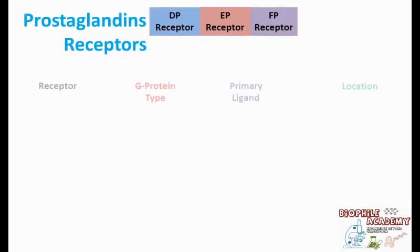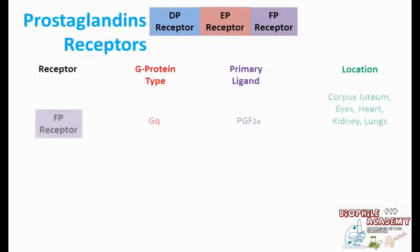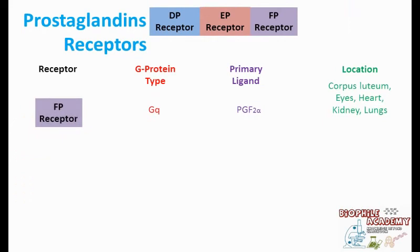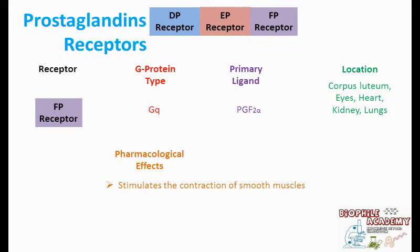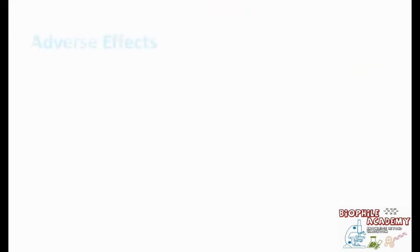Now coming to the FP receptor. It is of Gq type and the primary ligand is PGF2-alpha. It is located in the corpus luteum, eyes, heart, kidney, and lungs. Its pharmacological effect is stimulation of smooth muscle contraction.